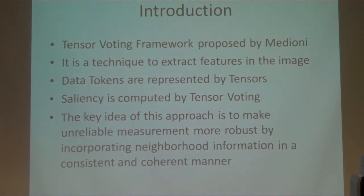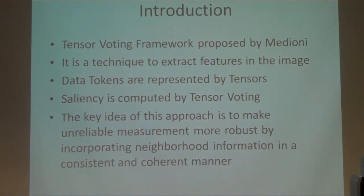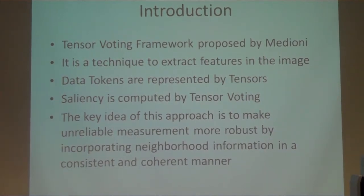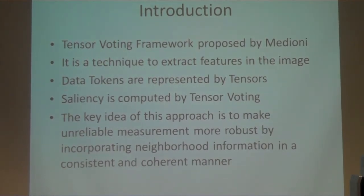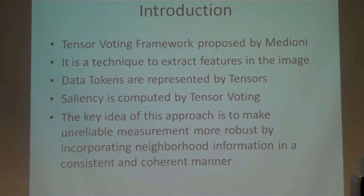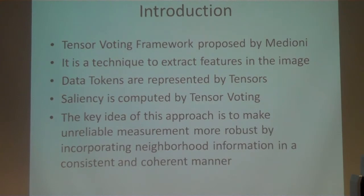What happens is when each and every point receives some data, or a token, it gets distributed to its neighbor points — this is called tensor voting. When tensor voting takes place, there are some kinds of surfaces, curves, or points that come out. This is called saliency — the salient features of the image, computed by tensor voting.